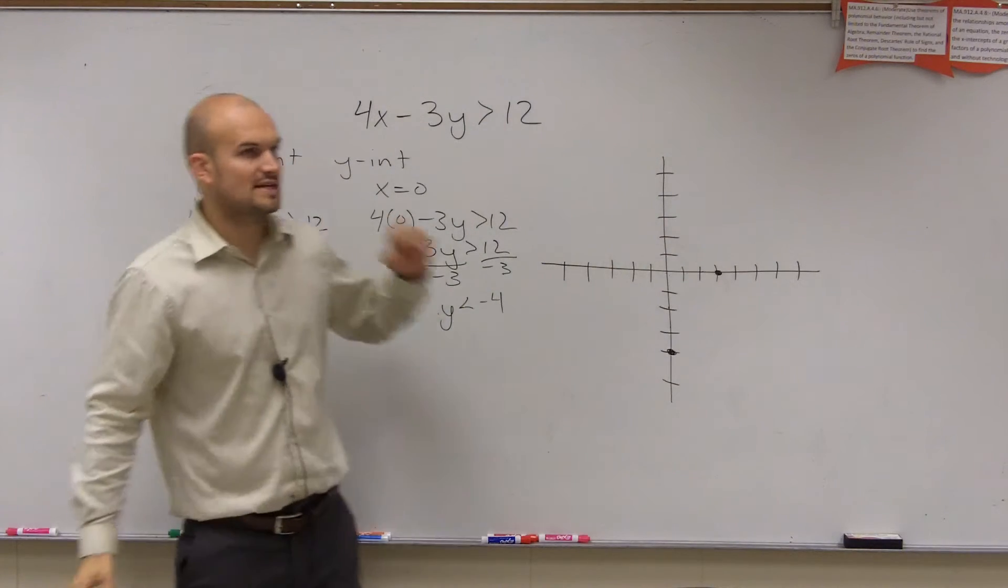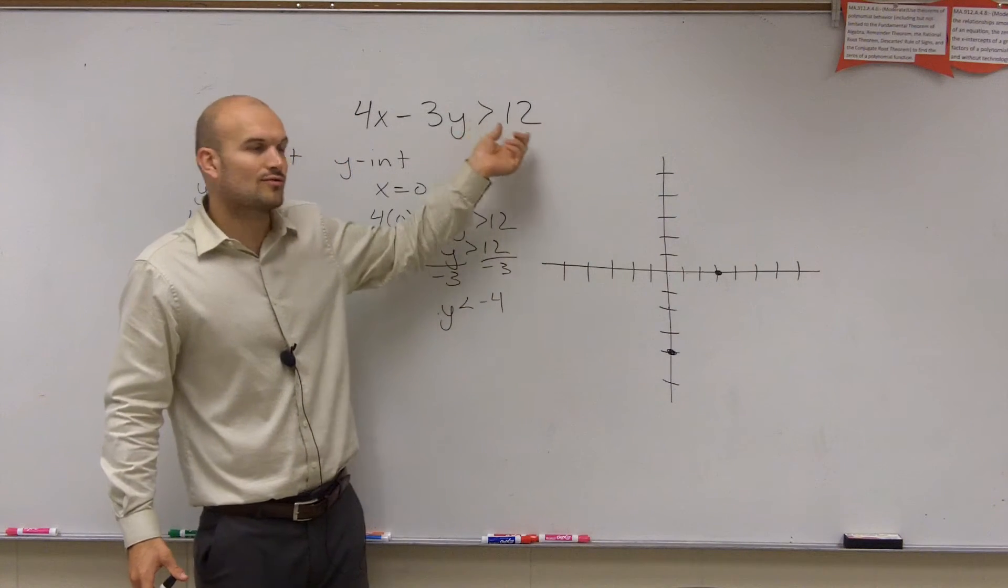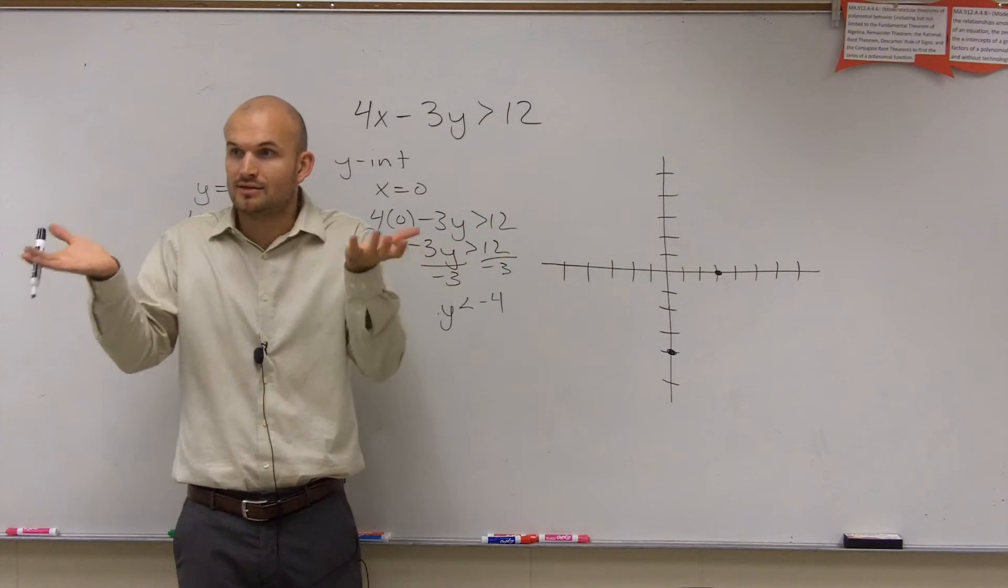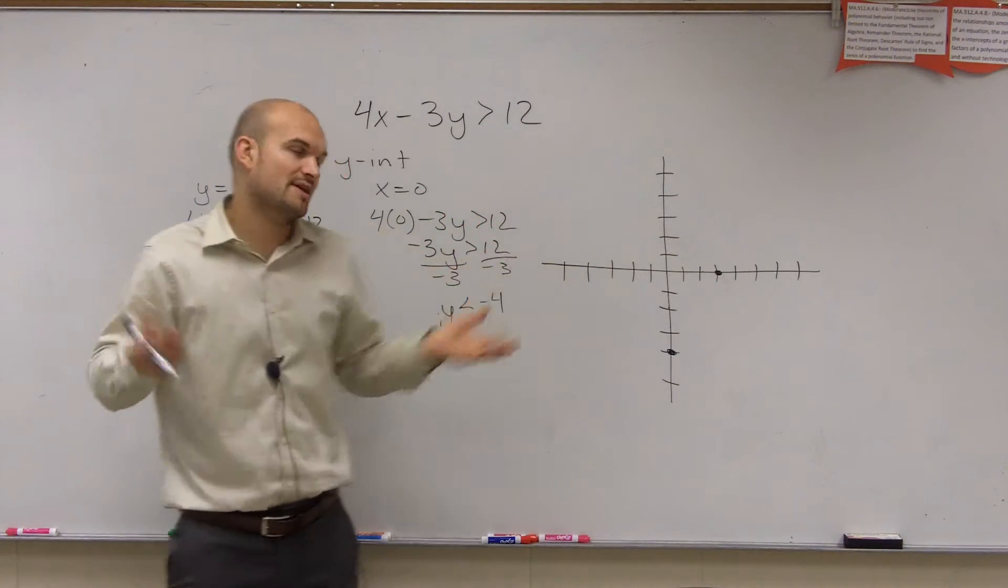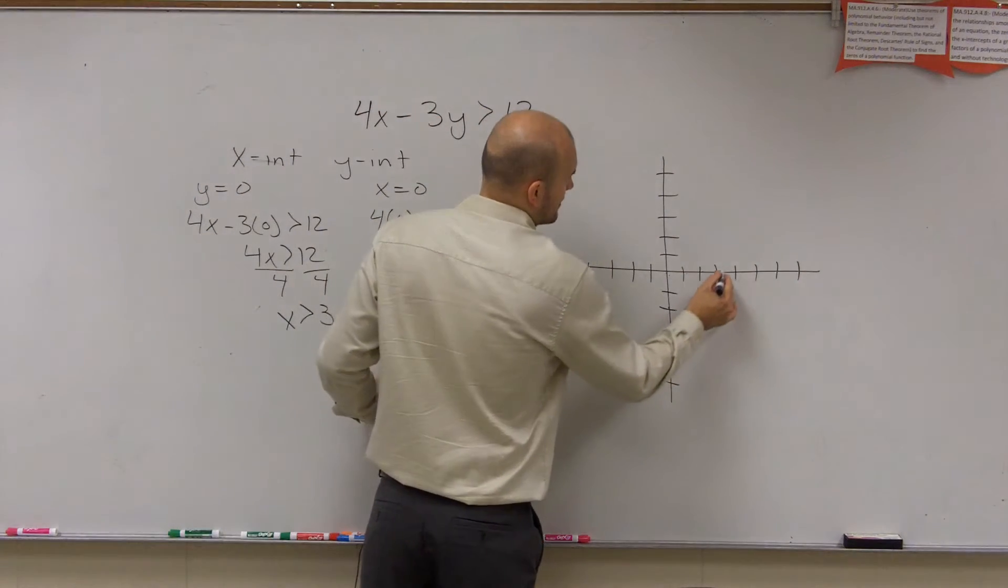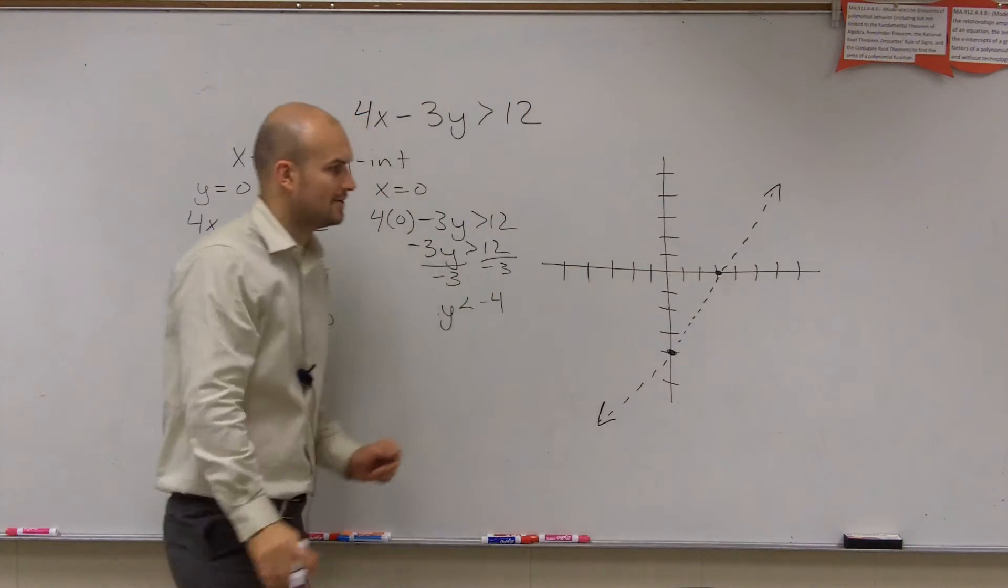Right, because if you're going to use a test point, you're going to pick a point that's on the line, then if it's less than or greater than, it's not going to be true, right? Because you're going to have an equality, the line is going to be equal. So if you have less than or greater than, it's not going to be equal. So therefore, to represent a solution that does not include the line, we're going to show a dashed line.